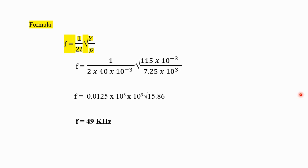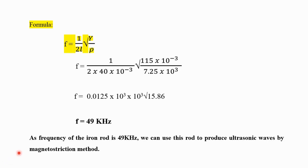After putting the values into the formula and doing the calculations, the answer is 49 kilohertz. Since the frequency of the rod is 49 kHz, which is greater than 20 kHz (the ultrasonic threshold), we can use this rod to produce ultrasonic waves by the magnetostriction method. These are the types of questions related to the magnetostriction method and piezoelectric method. If you have any queries, please post them in the comment box. Thank you.